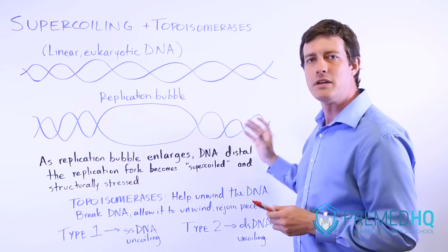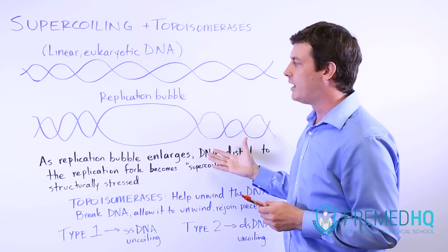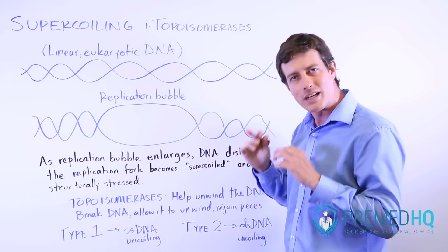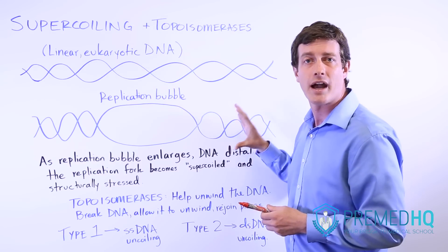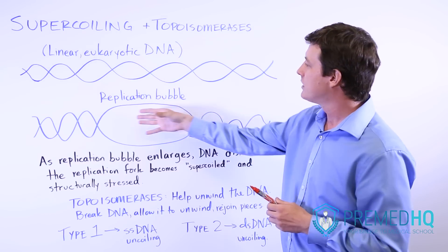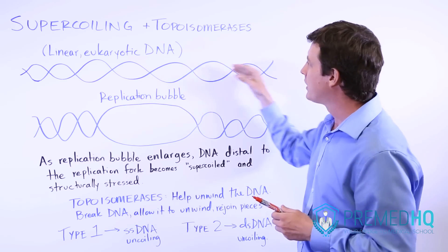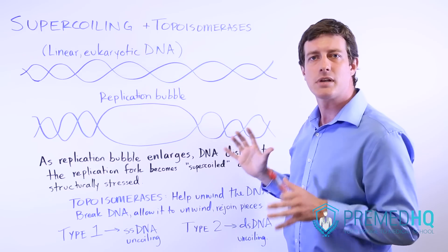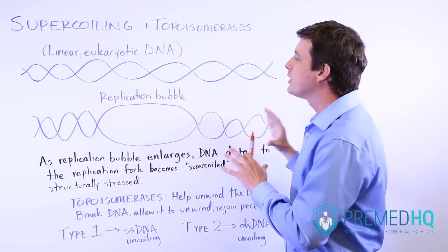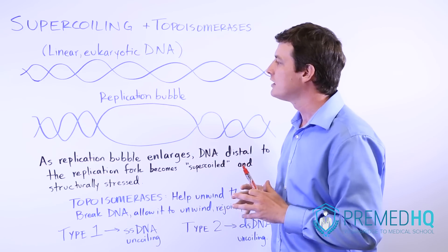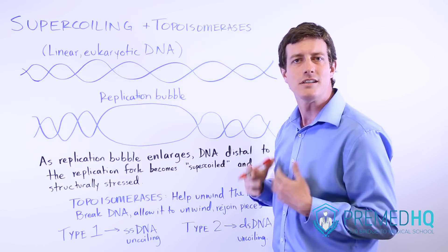This isn't something to absolutely commit to memory because it's often going to be tested in a passage or perhaps in a discrete question where they give you the necessary information and provide some background. But recognize that because of this replication bubble and because this is a linear eukaryotic DNA structure, there is some mechanical stress of supercoiling that can create barriers to smooth replication, and thus we need solutions that enable us to deal with that problem.